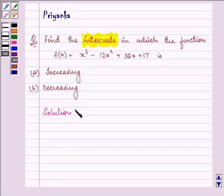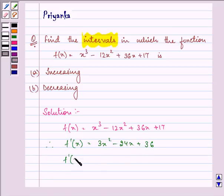So here the function which is given to us is x³ - 12x² + 36x + 17. First, find out its derivative. So its first derivative will be 3x² - 24x + 36. And taking 3 common, we are left with x² - 8x + 12 in the bracket.